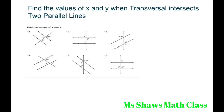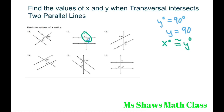For number 12, this one's an easy one. These are parallel lines, so these are all 90 degrees here. If we use the alternate interior angle theorem, this Y would be 90. So Y is 90. And then for these two intersecting lines, we know that X degrees is congruent with Y degrees. Y is 90, so X equals 90.